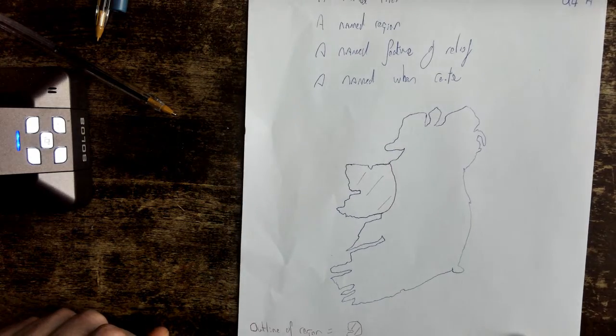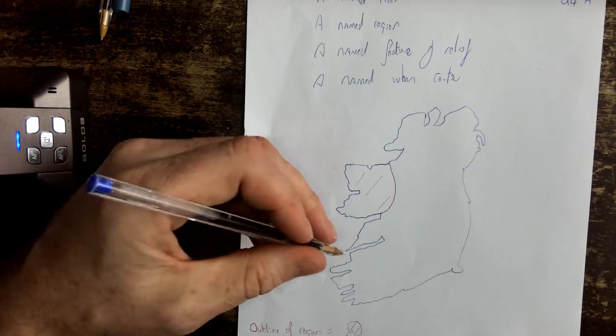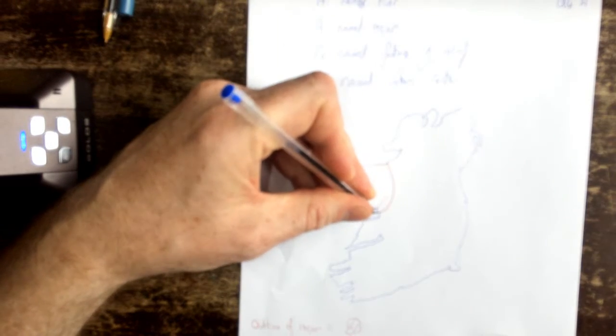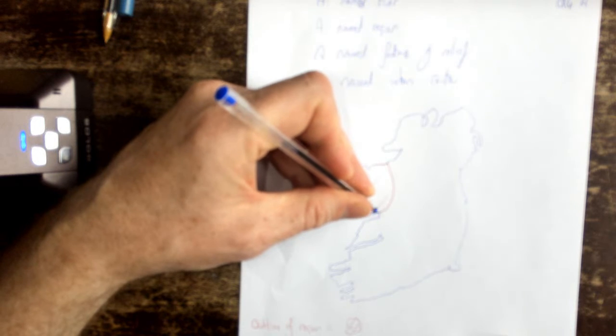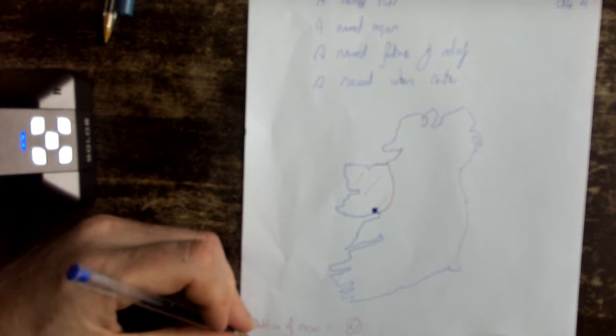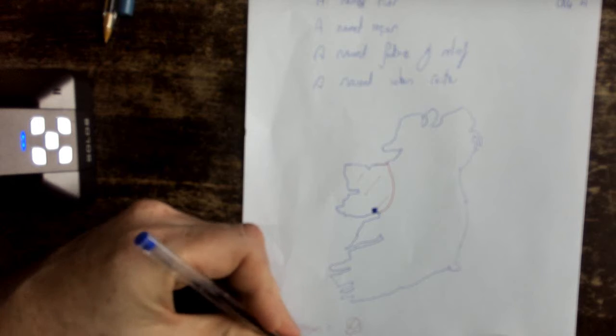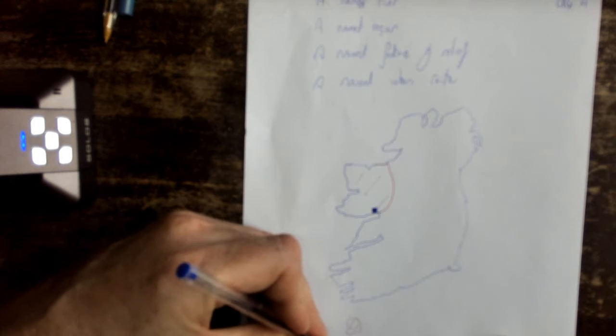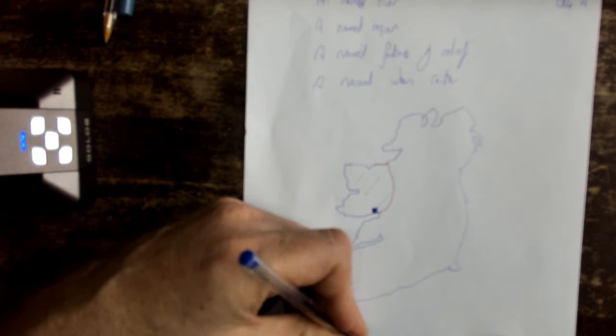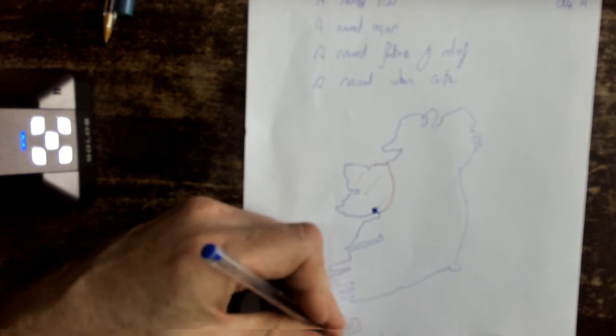So the features I'm going to ask for is a named river, two urban centres. Actually sometimes they ask for two urban centres. So I'm going to mark on the first one, which is Galway city. And I'll give it a square, because urban centre, and in brackets I'm placing Galway city.